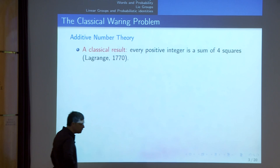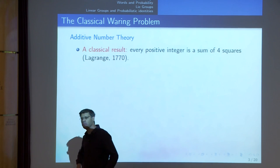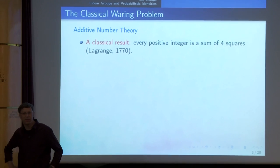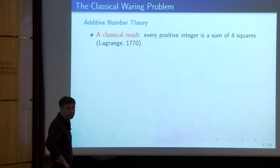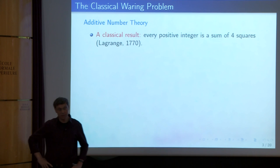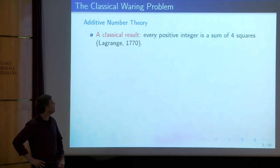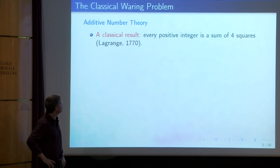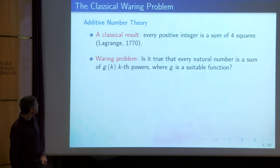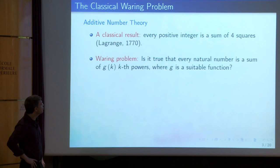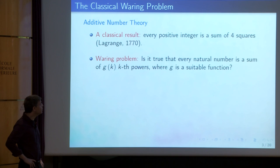I mentioned the classical Waring problem. The topic of approximate sum groups is very active nowadays. The motivation came from additive number theory — my original motivation came from additive number theory. This is the Waring problem. Everything starts with the result of Lagrange that every positive integer is a sum of four squares. Waring asked whether you can generalize it vastly and say that every natural number is a sum of g(k) k-th powers for a suitable function g.